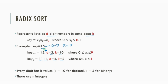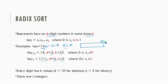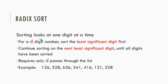For base k equals 10, every digit can have k different values. This information is important for counting sort, because we use counting sort as part of Radix Sort. In counting sort, we declare an array of size k to count the frequency of the numbers.